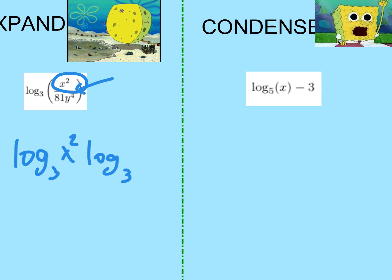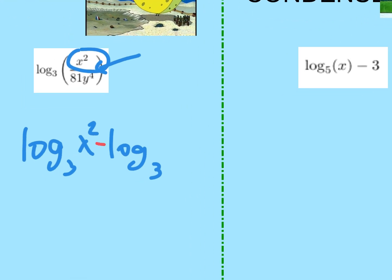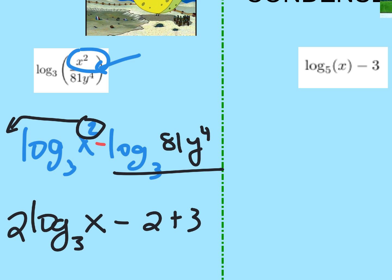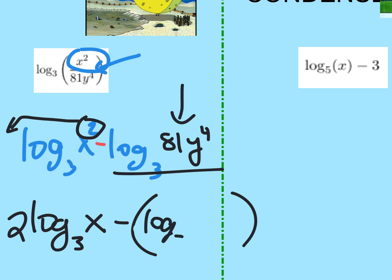Do this in stages. That part is partially expanded, but is it expanded all the way? No — the two that's on the argument has to go down in front of the log. That's called the power rule. Then I expand the second part. Note: there's going to be two parts after the minus, so I have to put parentheses around it because there's more than one thing. This log breaks up into log base three of 81 plus log base three of y to the fourth.